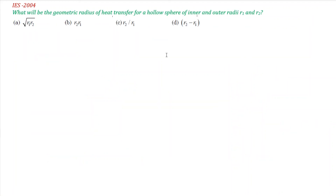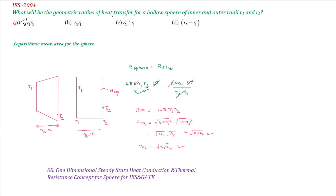The next question is IS-2004: what is the geometric mean radius for heat transfer through a hollow sphere? Applying the equivalent area concept to a sphere, the geometric mean radius is the square root of R1 × R2. In terms of area, this corresponds to the geometric mean area: square root of A1 × A2. This is the correct answer and is very straightforward.